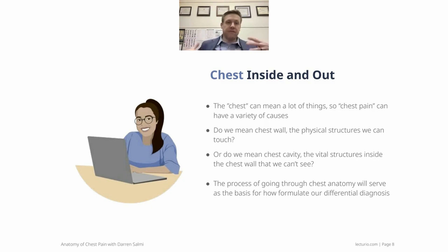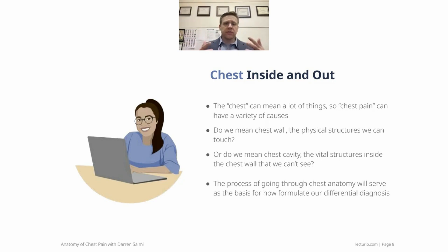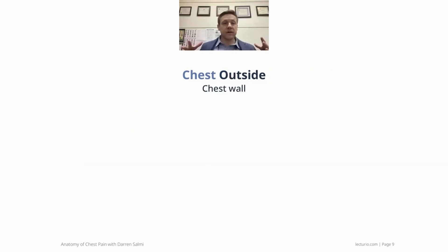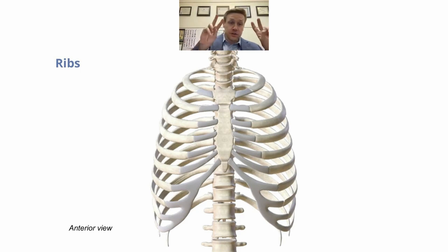There are a lot of causes for chest pain. Do we mean the chest wall — the physical structures around the chest cavity, like things we can touch? Or do we really mean the stuff inside the chest cavity where we have vital organs like the lungs and the heart? Going through chest anatomy broadly is going to serve as the basis for how we formulate our differential diagnosis when someone comes in with a chief complaint of chest pain. Let's start with that chest wall, the outside part of our chest cavity — the part you probably don't jump to right away when you think of chest pain.